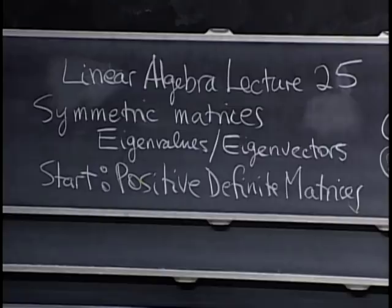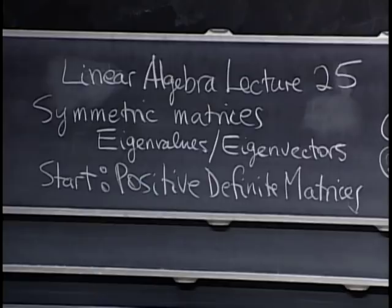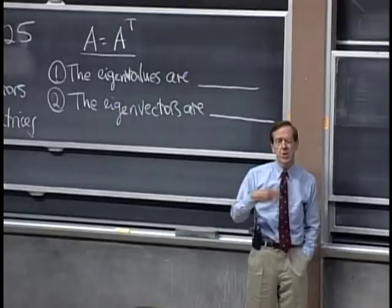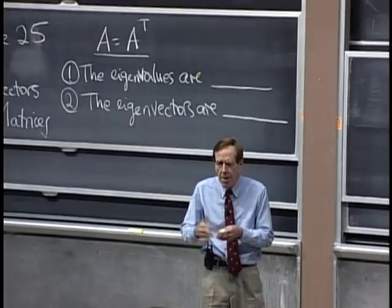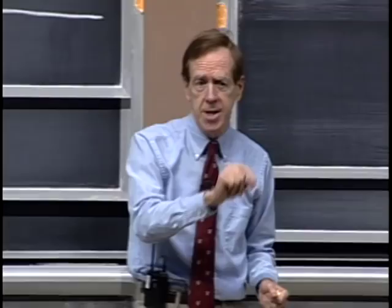Welcome to the lecture on symmetric matrices — the most important class of matrices. A equals A transpose. I'll tell you right away what's special about the eigenvalues and eigenvectors. This is how we look at a matrix now. For special types like Markov matrices, they had an eigenvalue equal to one. Now, symmetric matrices.